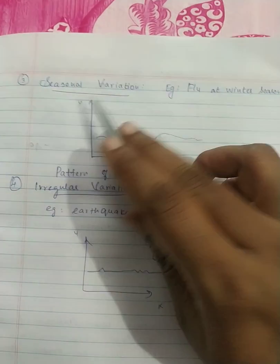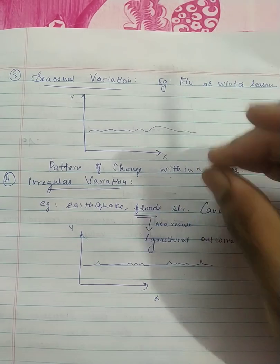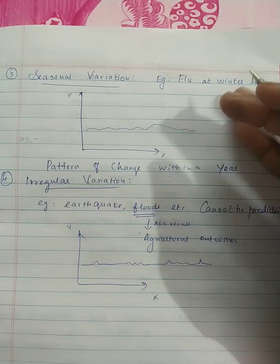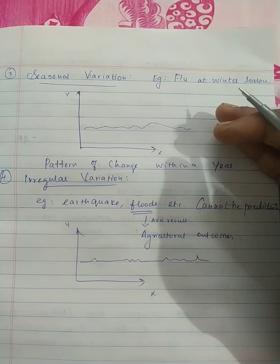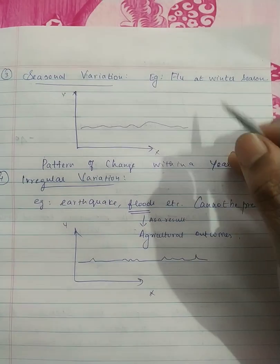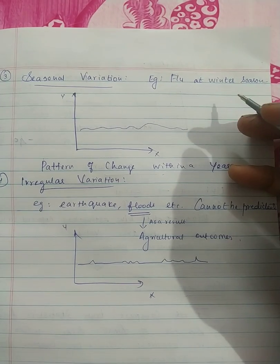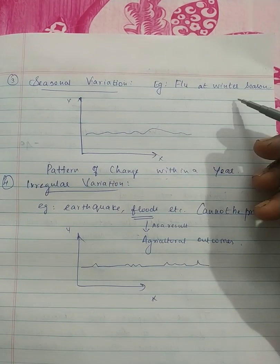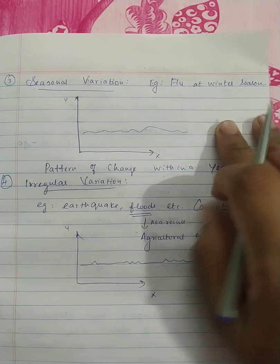Next one is seasonal variation. Seasonal variation occurs over a season. In winter, you can enjoy certain things; in summer, it is different. For example, fever cases are higher in winter and less in summer. The pattern changes within a year and across seasons — that is seasonal variation.